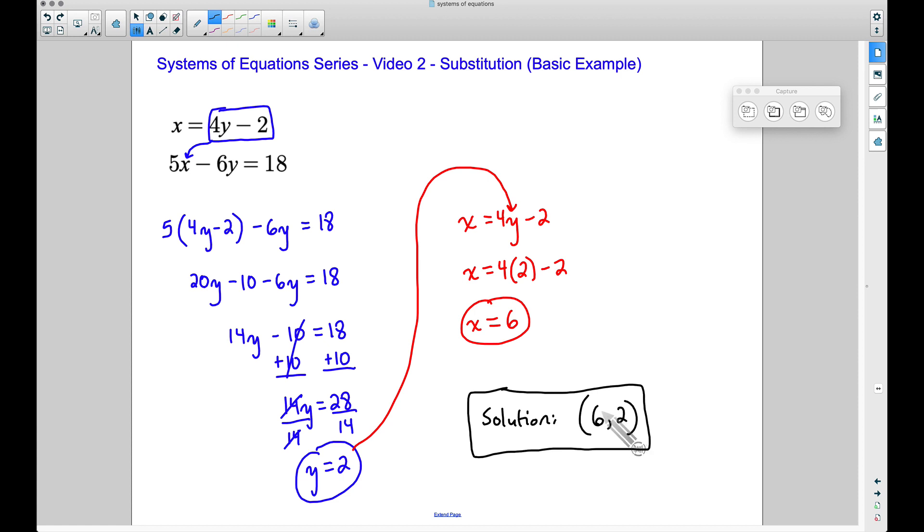Now make sure it works for the second equation. 5 times X, 5 times 6—right, X equals 6—well, 5 times 6 is 30, minus 6 times 2 because Y is 2, well 6 times 2 is 12, 30 minus 12 gives you 18. Perfect, this does work, and this is the solution to our system of equations.